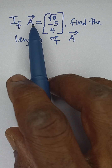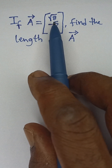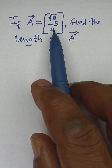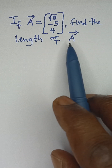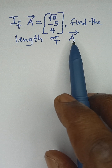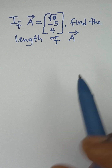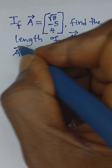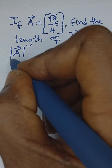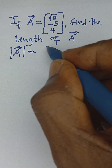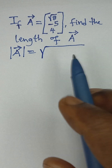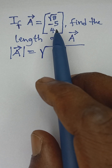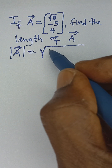If the vector in the direction of a is given by the values √8, negative 5, and 4, we need to find the length of vector a. The length of a is simply equal to the square root of the sum of the squares of these three values.